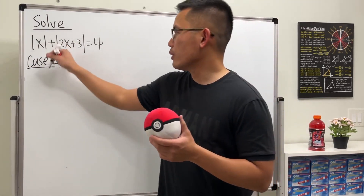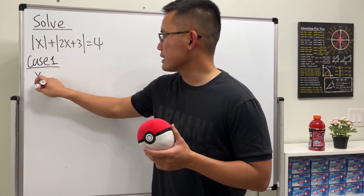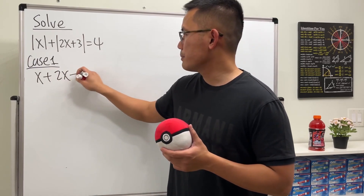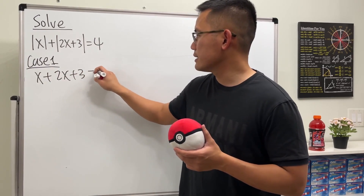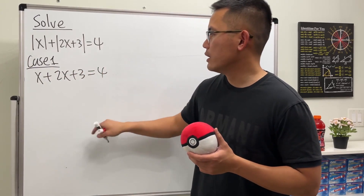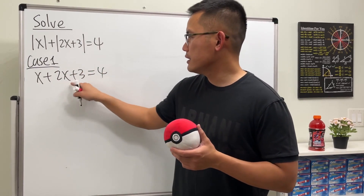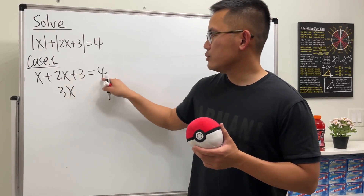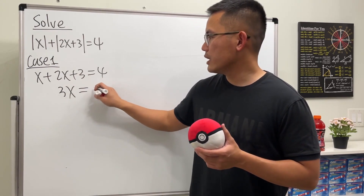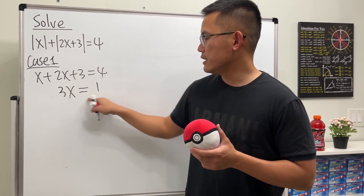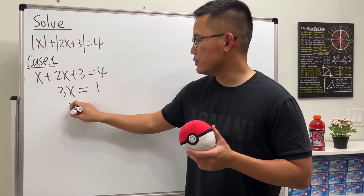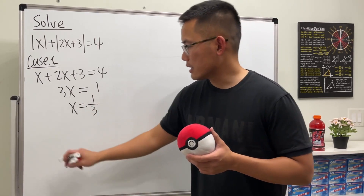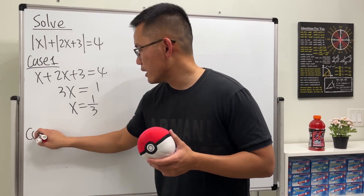Case 1: removing the absolute values gives us x plus 2x plus 3 equals 4. Solving this, we get 3x minus 3 on both sides equals 1, and dividing both sides by 3 gives us x equals 1/3. That's Case 1.